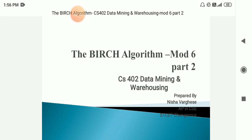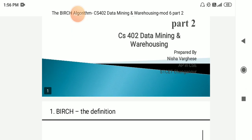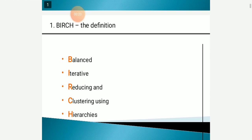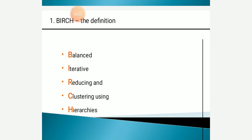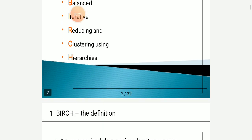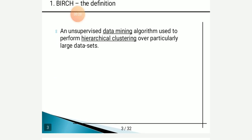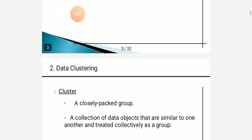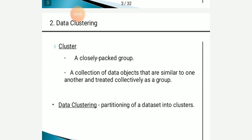Moving to the definition, BIRCH stands for Balanced Iterative Reducing and Clustering using Hierarchies. It is an unsupervised data mining algorithm used to perform hierarchical clustering over particularly large data sets. A cluster is a closely packed group, or a collection of data objects that are similar to one another and treated collectively as a group.